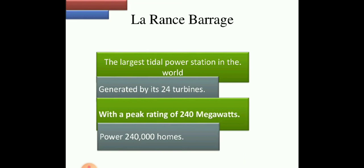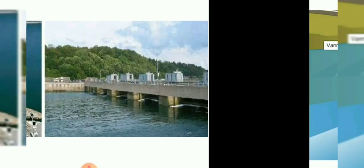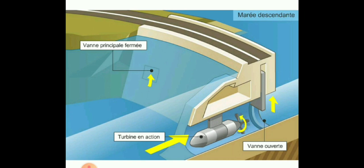The La Rance barrage is the largest tidal power station. It is generated by 24 turbines with a peak rating of 240 megawatts, providing power to approximately 2,400,000 homes. There is a schematic cross-sectional diagram of this facility.